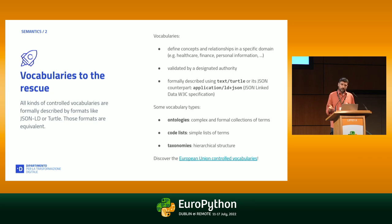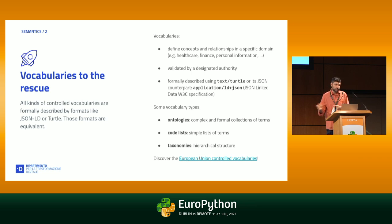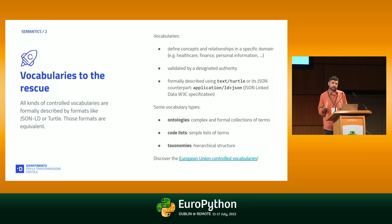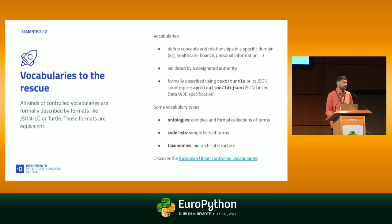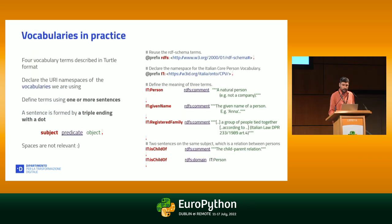All those specifications and languages are completely isomorphic, so you can switch from Turtle to JSON-LD and have exactly the same information. Complex vocabularies are called ontologies, but that's not the focus of this talk. Code lists are the simplest form of vocabulary — they are the simplest form of terms, for example the job title one I was describing.